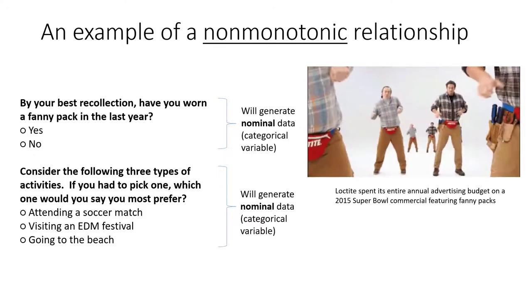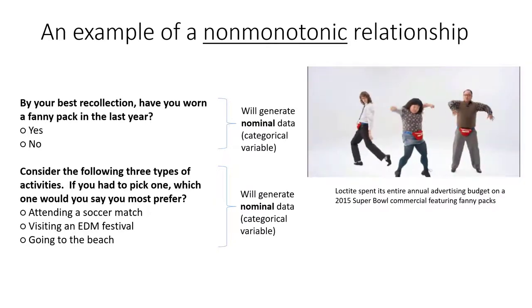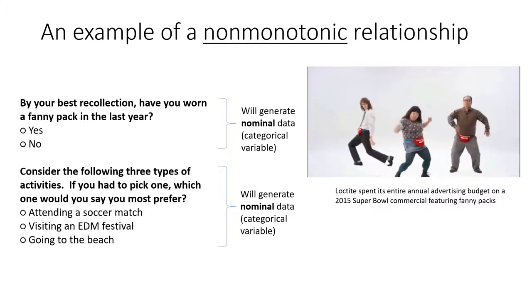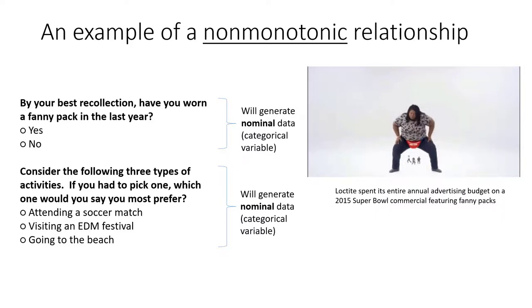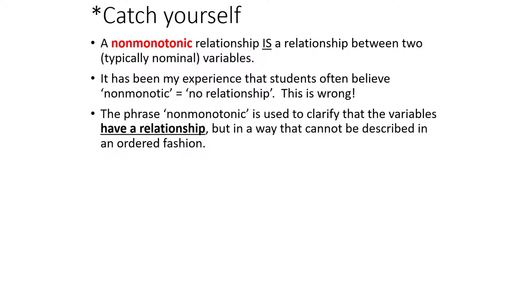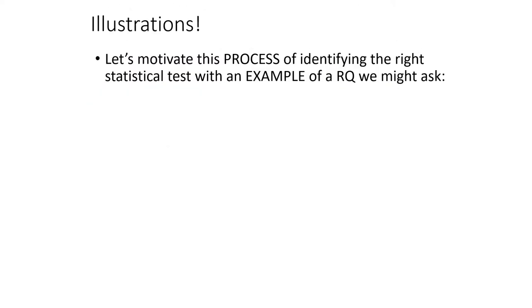Speaking of fanny packs, perhaps my favorite fanny pack video of all time is the 2015 Super Bowl commercial for the Superglue product Loctite. They spent their entire annual advertising budget on this single clip. Here's a good time to catch yourself: a non-monotonic relationship is a relationship between two nominal variables. It's been my experience that the prefix 'non' in front of non-monotonic tends to throw some students off, thinking 'non' means no relationship. This is wrong. The phrase non-monotonic describes a type of relationship.